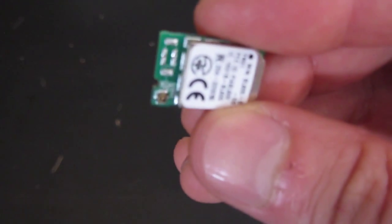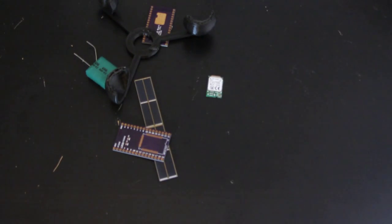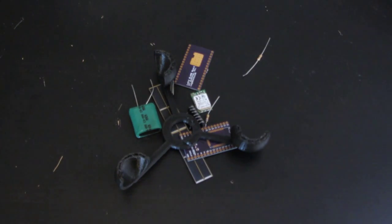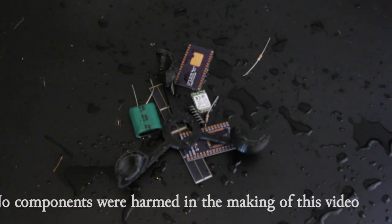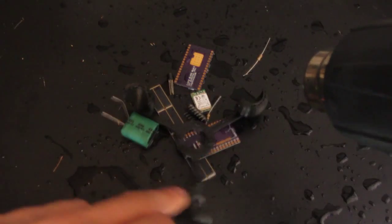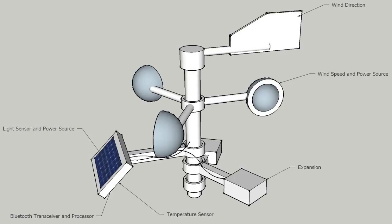What do you get if you start with a Bluetooth transceiver processor, add a supercapacitor, a solar panel, a couple of PCBs, some 3D printed structure, and some components, and expose it to some weather? That's right, a cheap, wireless, self-powering weather station.